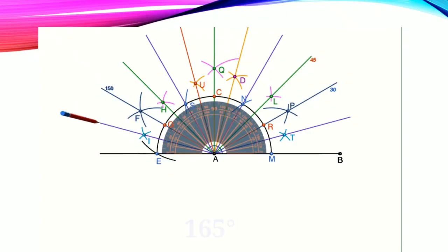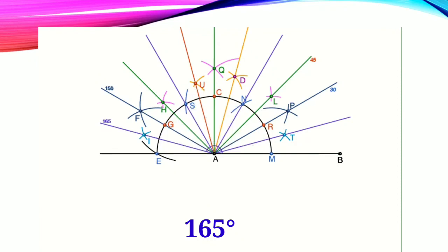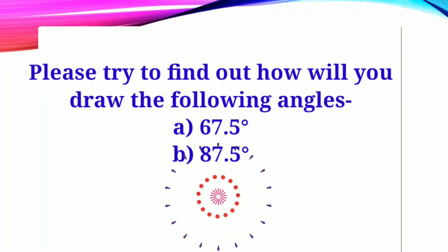So we saw how we got new angles by bisecting the previously drawn angles. In the similar way, we can get new angles by bisecting these given angles. If you have understood the concept well, please try to find out these angles. That's all for today, thank you.